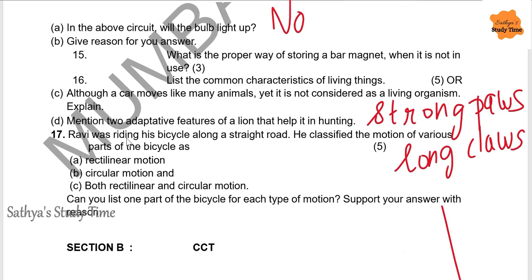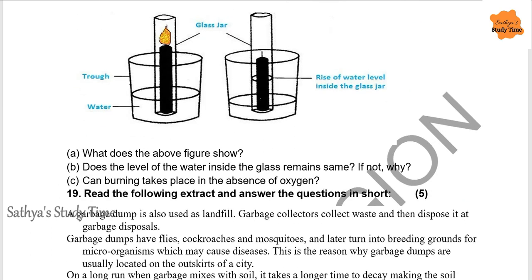Question 17: Ravi was riding his bicycle along a straight road and classified the motion of various parts as rectilinear, circular, or both. List one part for each type of motion with reasons. Rectilinear motion: the entire body of the bicycle moving straight. Circular motion: the pedals or spokes of the tire moving in circles. Both rectilinear and circular motion: the tires of the bicycle.